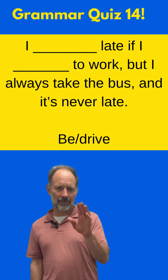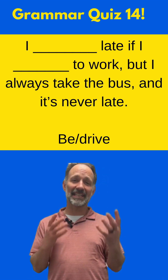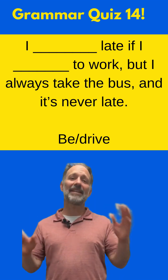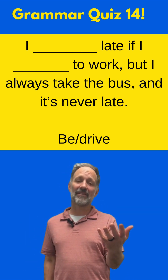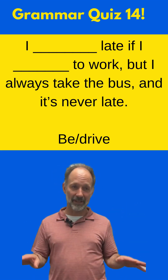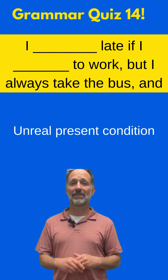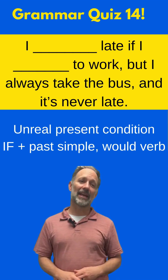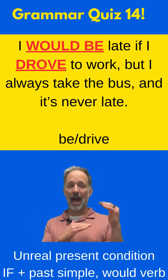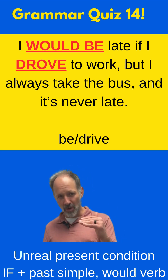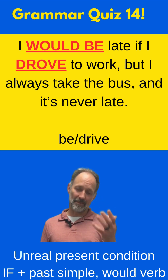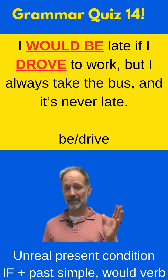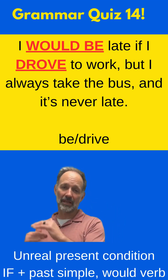Fill in the blank with the correct form of the verbs in this conditional sentence: I blank late if I blank to work, but I always take the bus and it's never late. This idea of being late and driving is an unreal present condition. The form for unreal present conditions is if plus past simple, then would plus the verb. The main clause uses 'would': I would be late. And the if part: if I drove to work. So once again — if plus past simple, would plus verb.